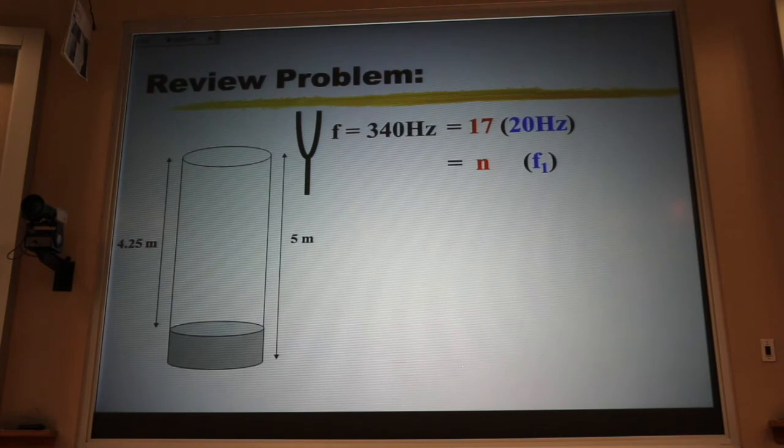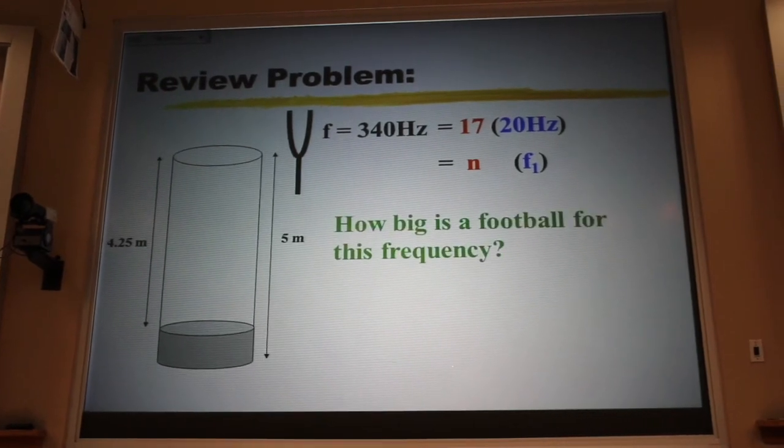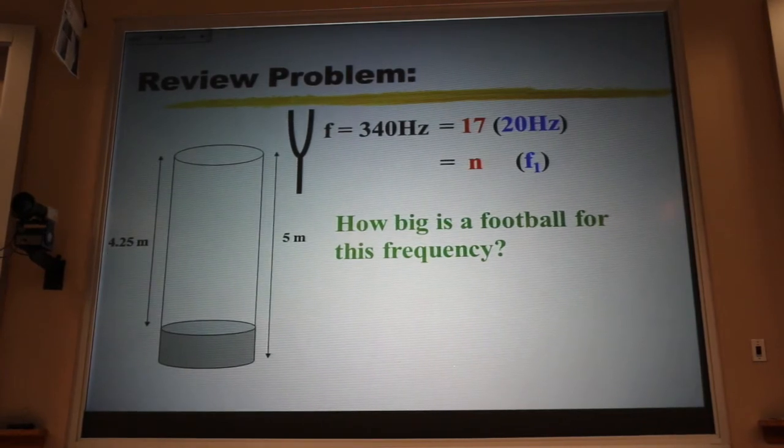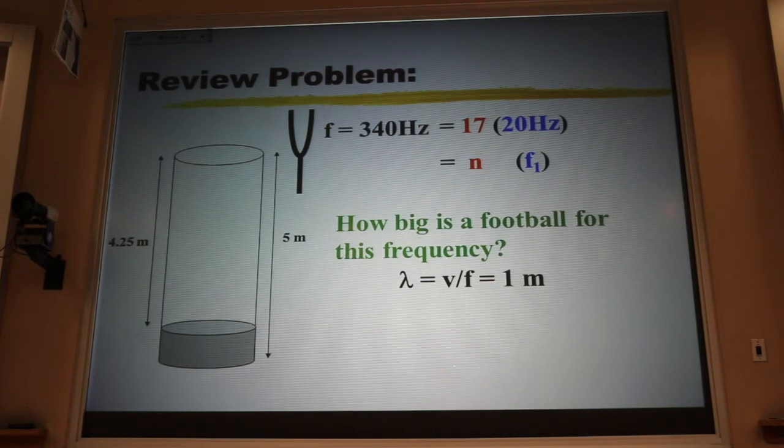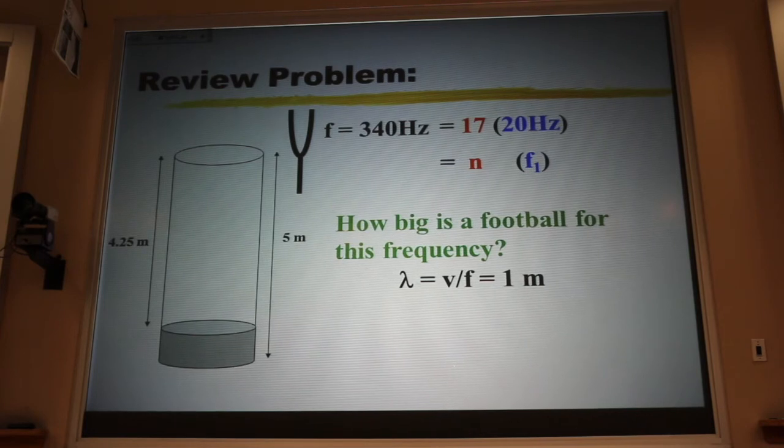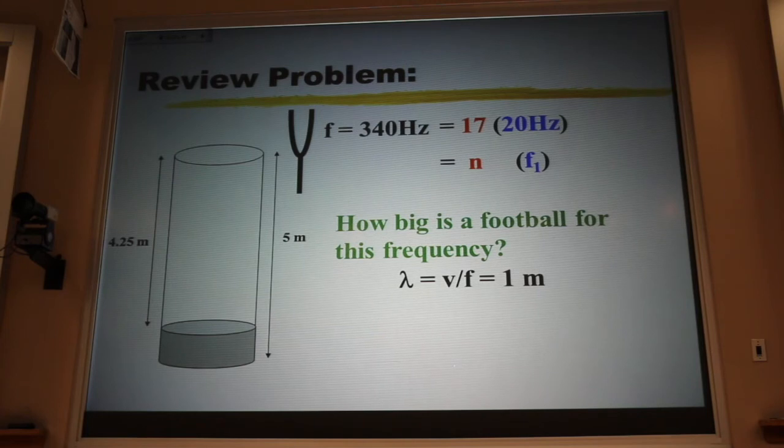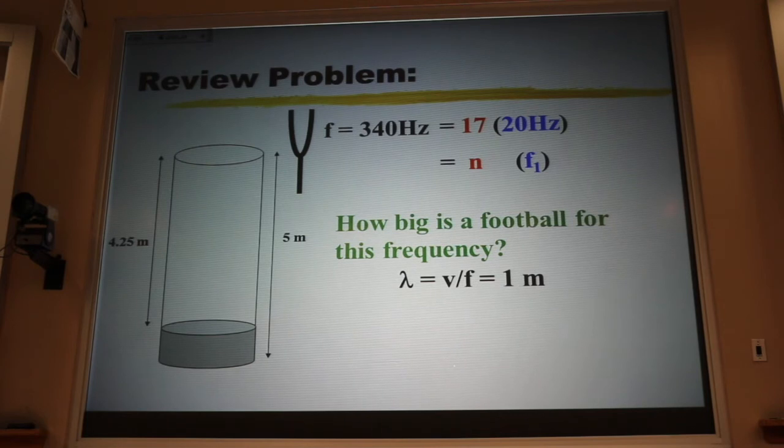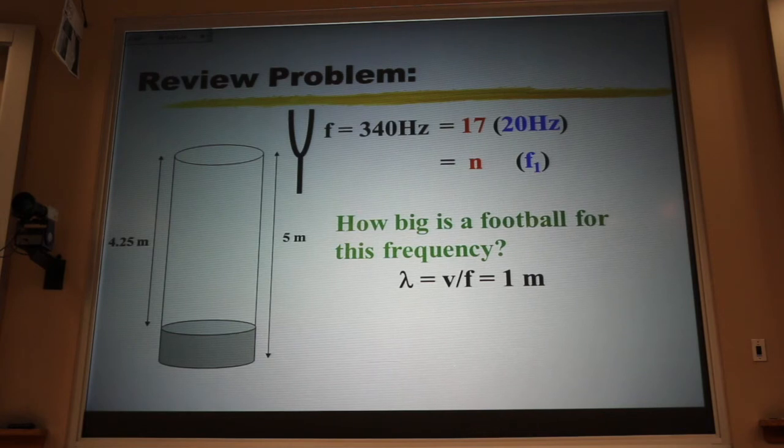There's another way to do it, and that is to find out how big your footballs are. If I use that wave equation again, V equals F lambda. I'm doing it for the seventeenth harmonic. This is 340 meters per second. This is 340 hertz. That makes lambda-17 easy to calculate. It's one meter.